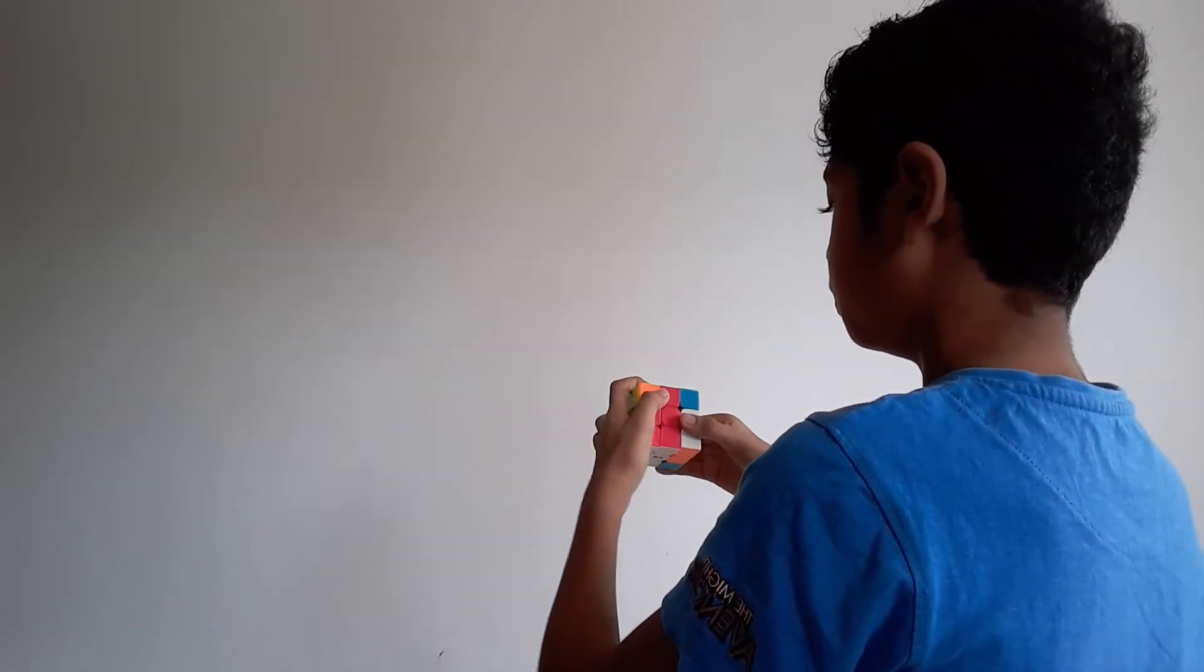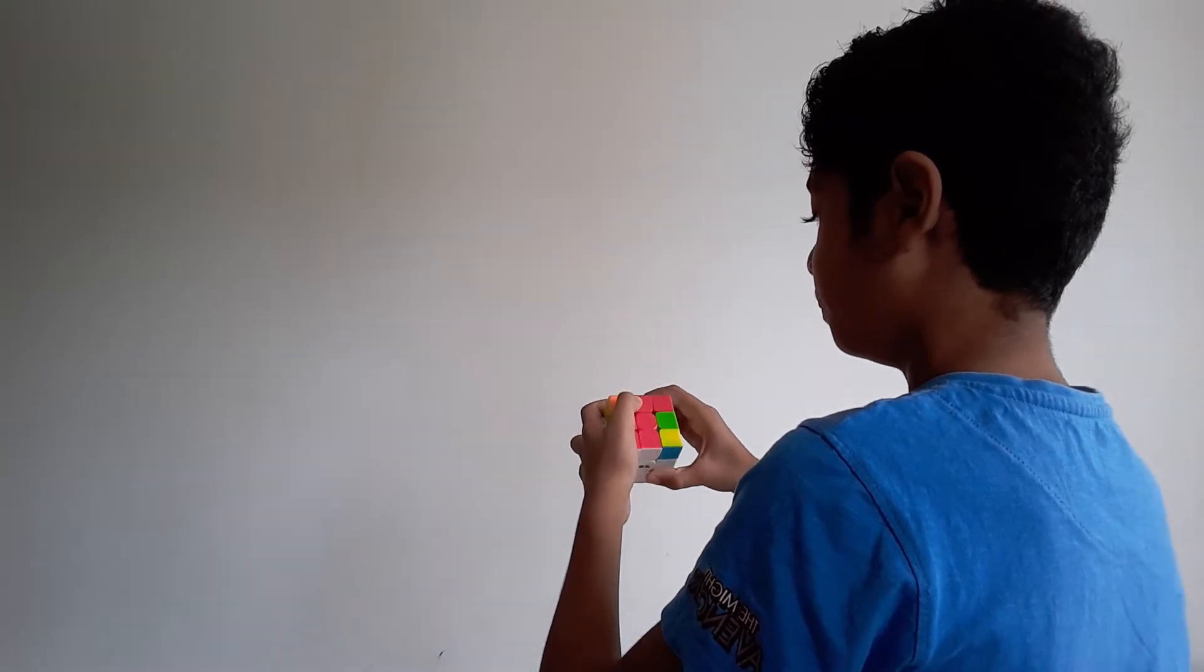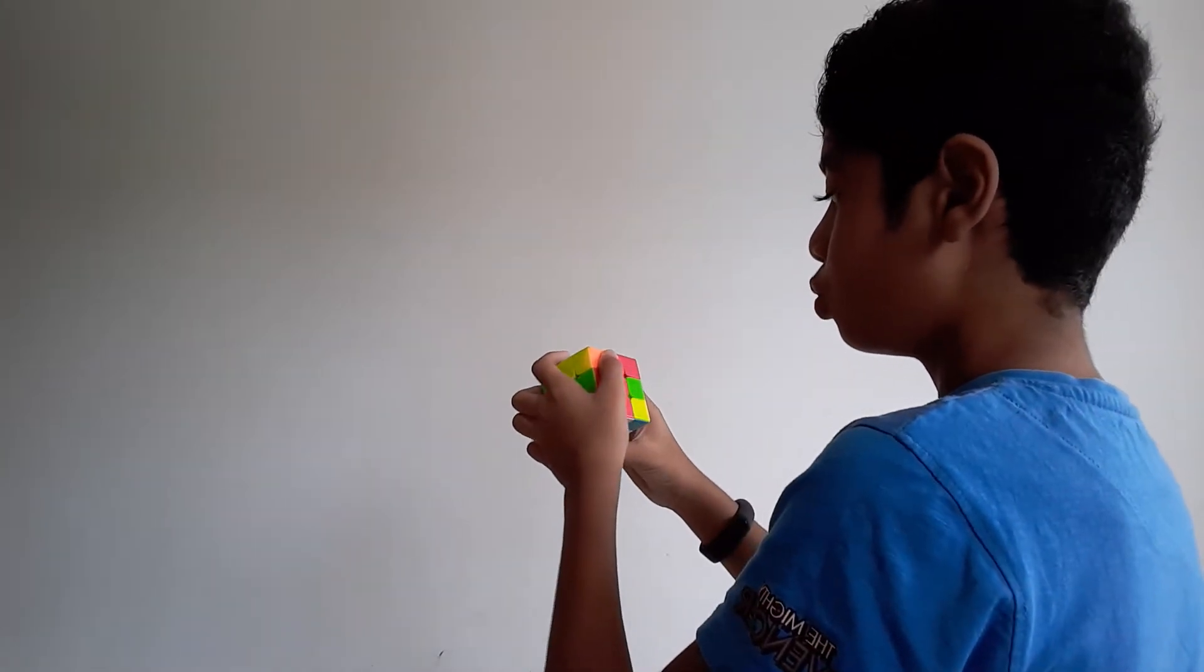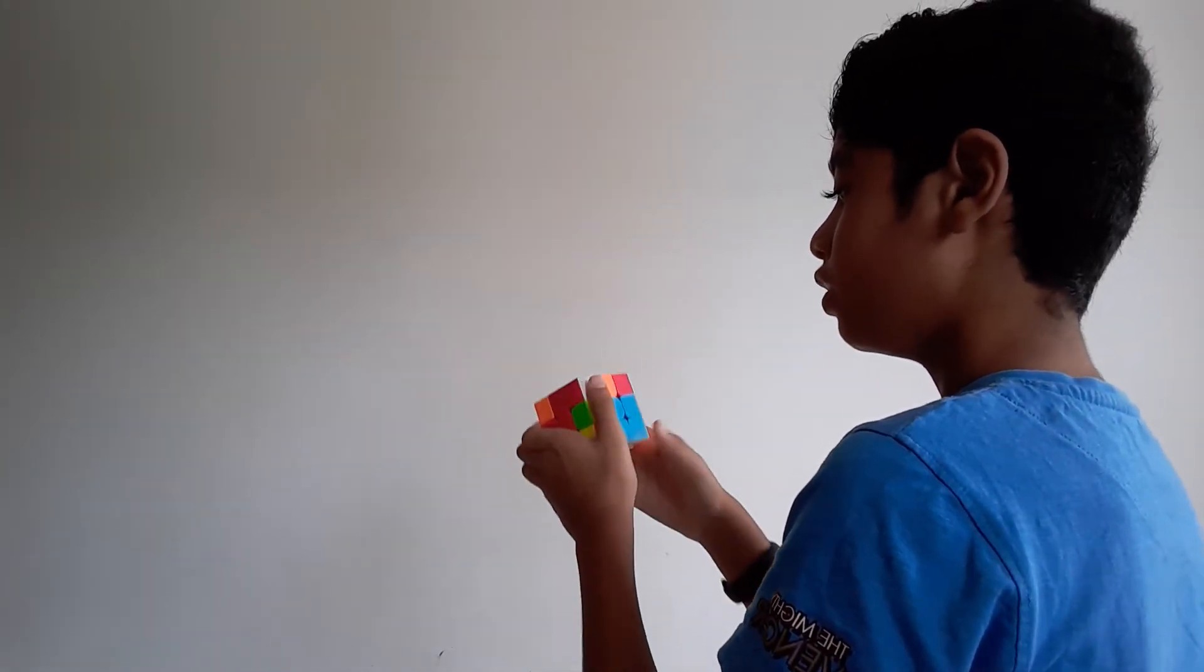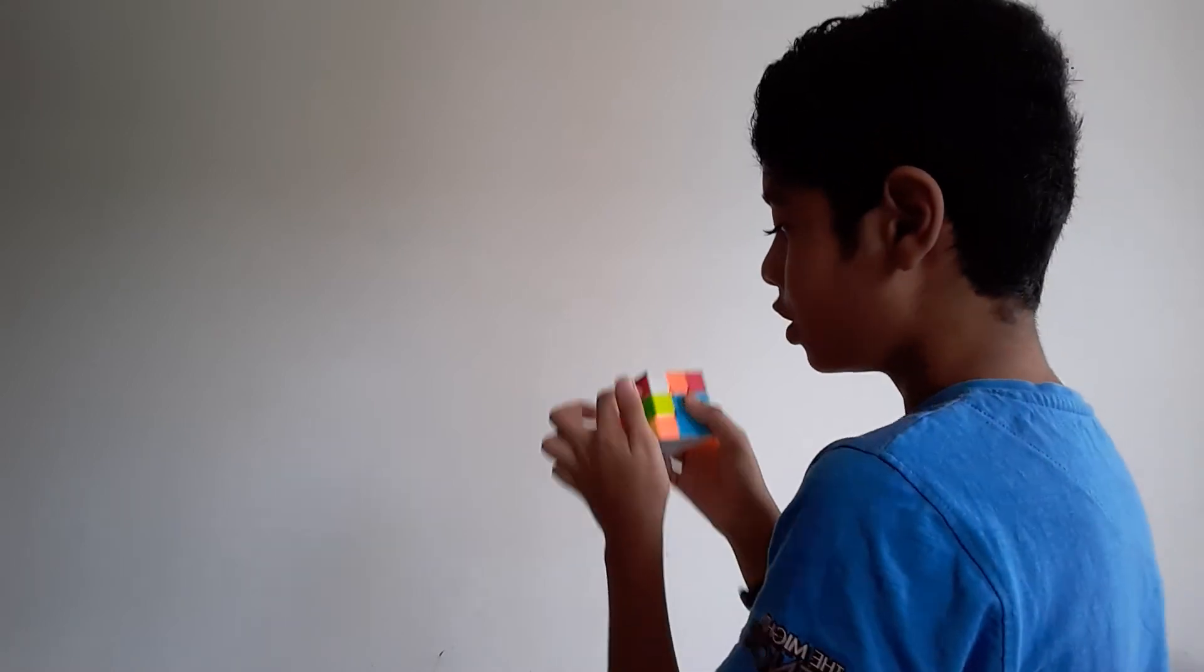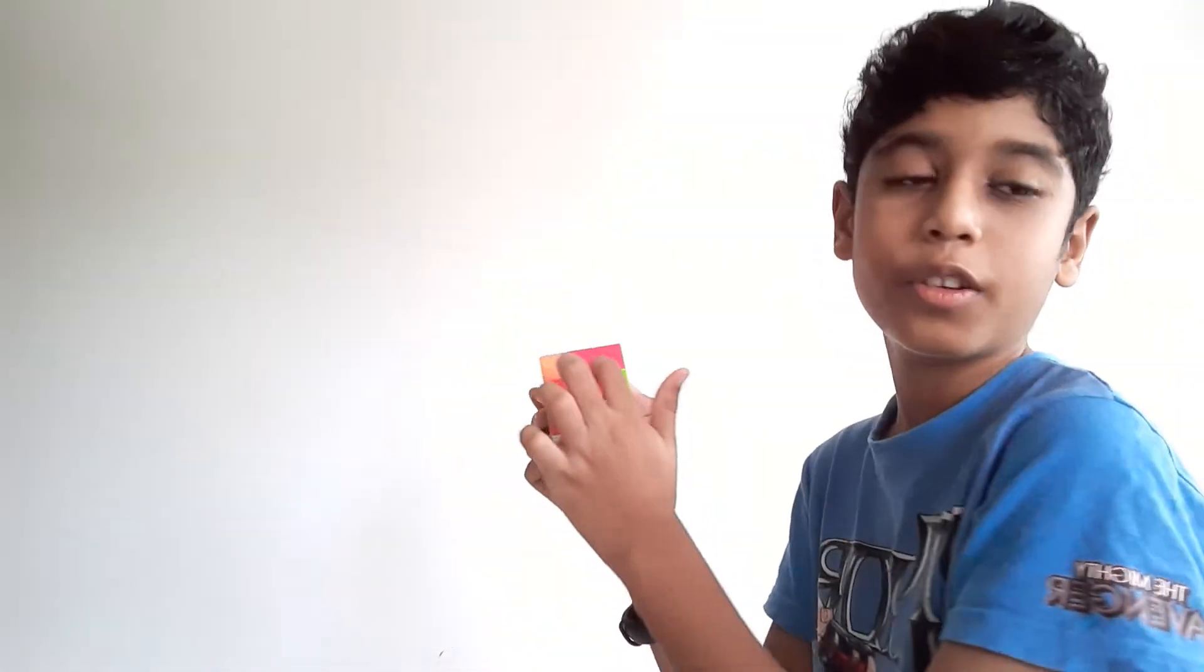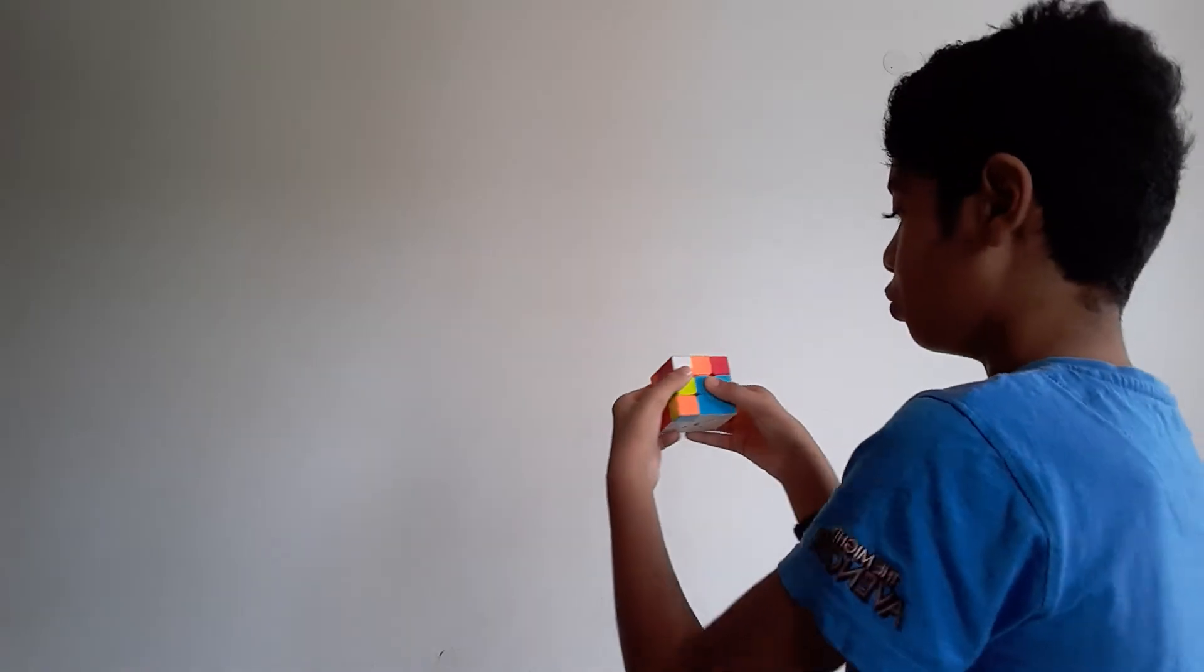L, U, L prime. Then you have to go to the face where there is the yellow sticker and match it in the corner like we did in the first layer.